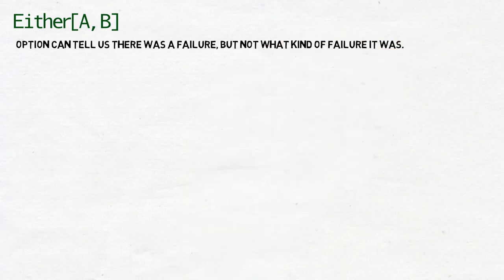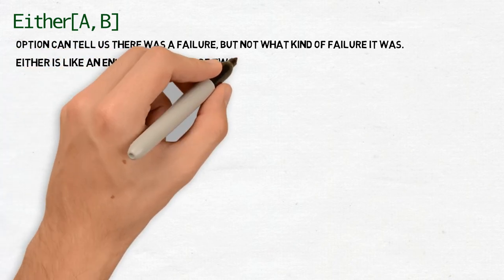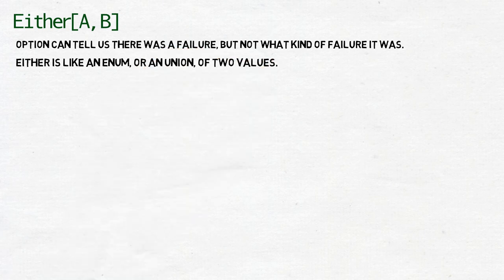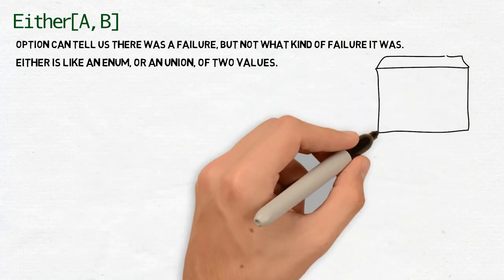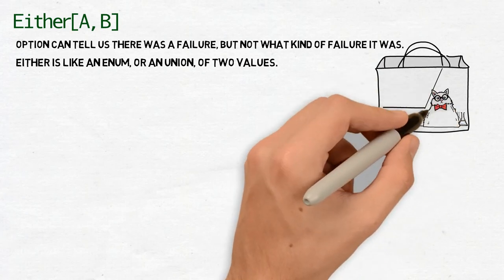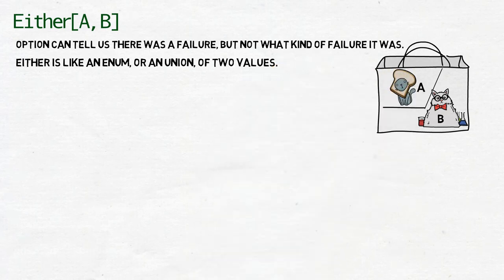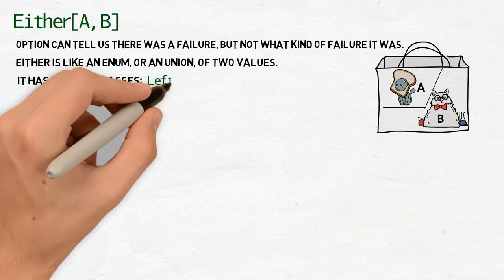But this is exactly the reason why there is either. In its generic form, either is like a union of two values. An instance of either A or B can contain only one element, but that element can be either of the type A or B. Similar to how option array has two subclasses, some A and none, either A or B also have two, left of A and right of B.